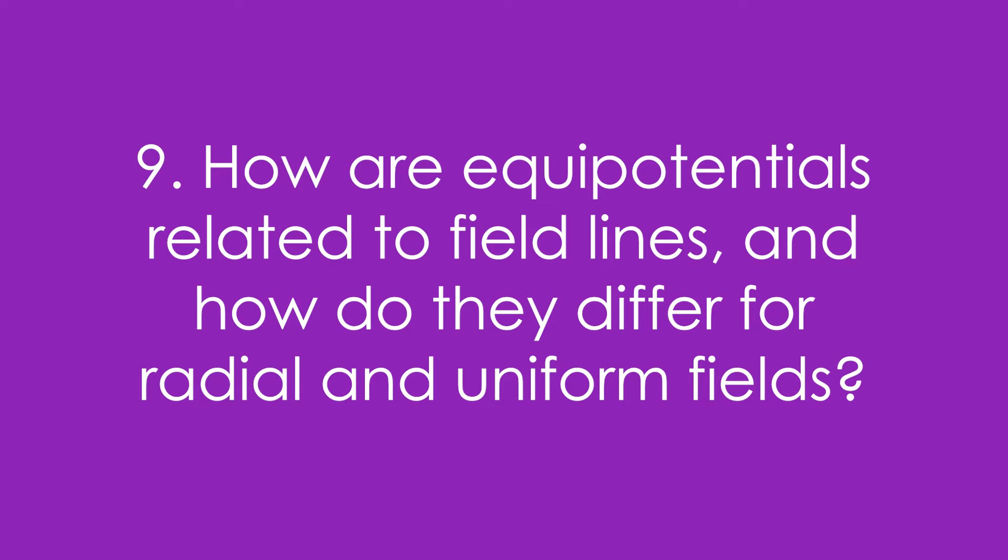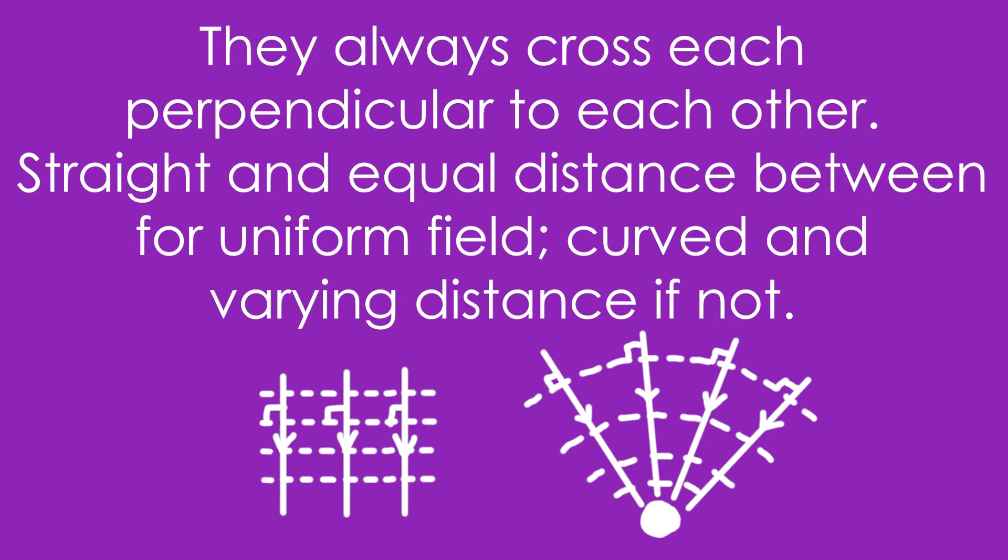Nine, how are equipotentials related to field lines, and how do they differ for radial and uniform fields? They always cross perpendicular to each other. Equipotentials are straight and an equal distance from each other for a uniform field, and curved and a varying distance if not, say for a radial field like here.